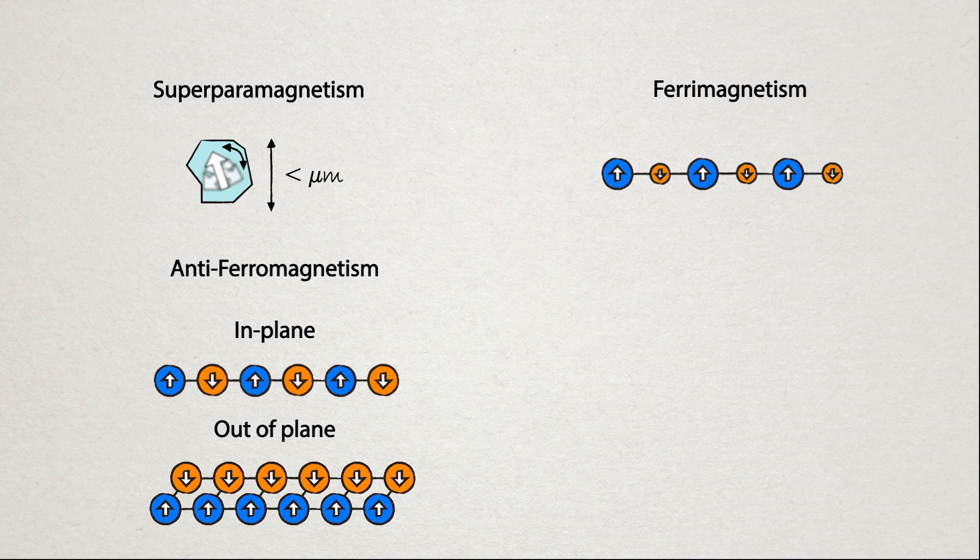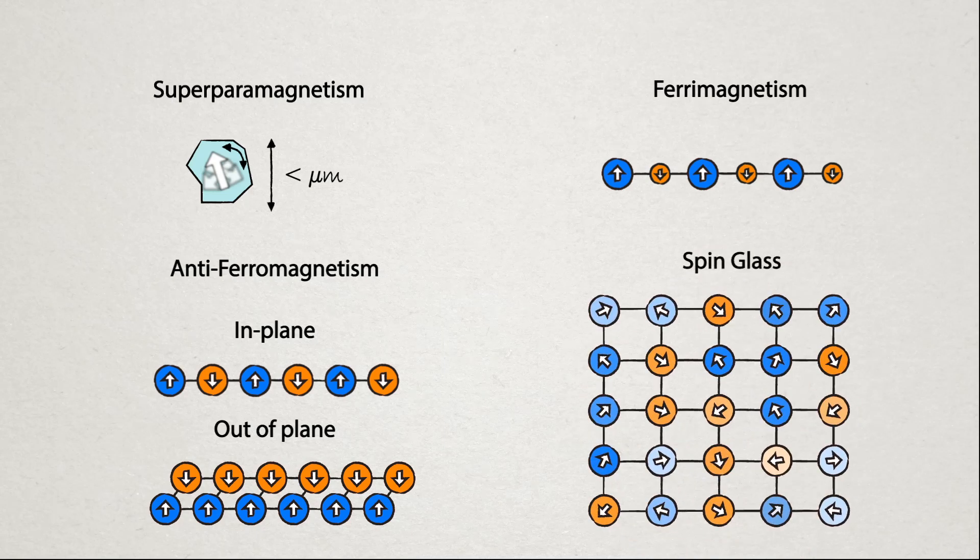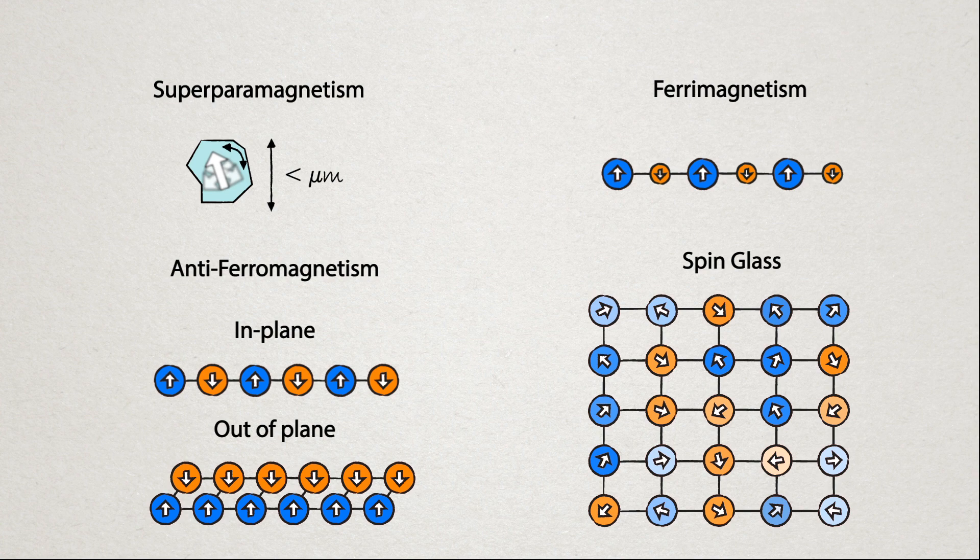Finally, there's one other form of exotic ferromagnetism, and this is called spin glass. This is where the spins of the atoms in the solid act as if they're disordered, where the spins don't align in a regular pattern.